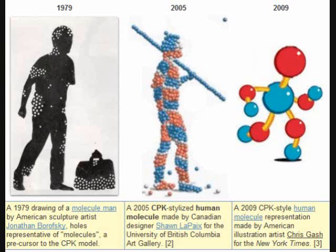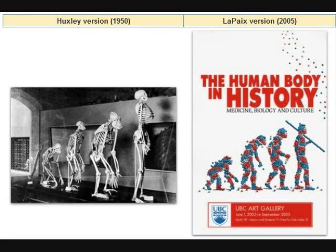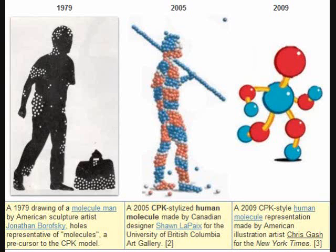The middle diagram is a 2005 CPK stylized human molecule made by Canadian designer Sean Lepox for an art exhibit at the University of British Columbia Art Gallery, part of an evolution-of-man-from-ape-to-human diagram. The third depiction on the right is the 2009 CPK style human molecule representation made by American illustration artist Chris Gash for a New York Times article on nanoscale walking molecules.